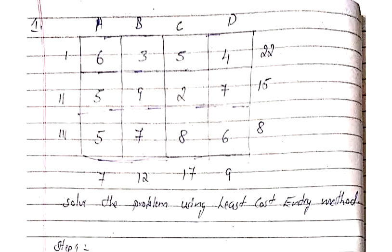Hello everyone. Today we shall discuss the least cost entry method. We had already discussed this method and solved an example problem, so let us solve one more problem. The matrix values are 6, 3, 5, 4, 5, 9, 2, 7, 5, 7, 8, 6 — these represent unit costs. The supply values are 20, 15, and 8, and the demand values in the last row are 7, 12, 17, and 9.